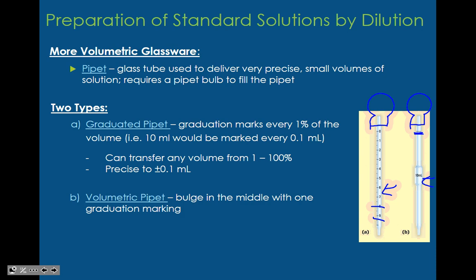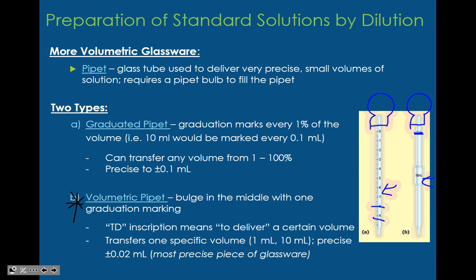The volumetric pipette is the one we would use in class. It has a bulge in the middle with one graduated marking, so it's only good for one particular volume. You transfer one specific volume — that's it. And it's quite precise.